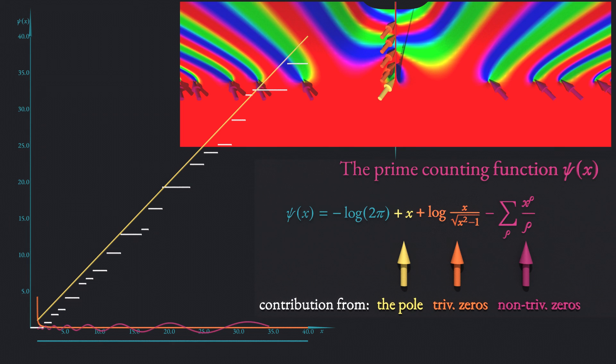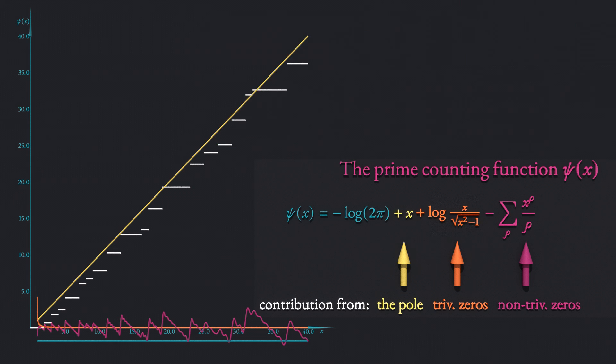The contribution from the non-trivial zeros by itself is an oscillating function. The amplitude of the oscillation is bounded by the square root of x. By the way, this is the only statement that relies on the truth of the Riemann hypothesis. All other results stated here are valid completely independent of the precise location of the non-trivial zeros. When more and more terms are added, these oscillations turn into a sawtooth-like shape. The negative slope exactly balances the contribution from the pole and the jumps just trace the appearance of the primes and the powers of primes.